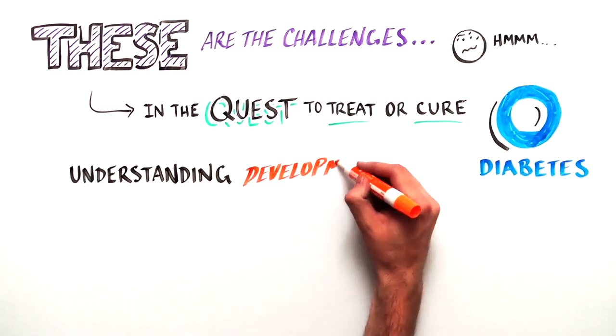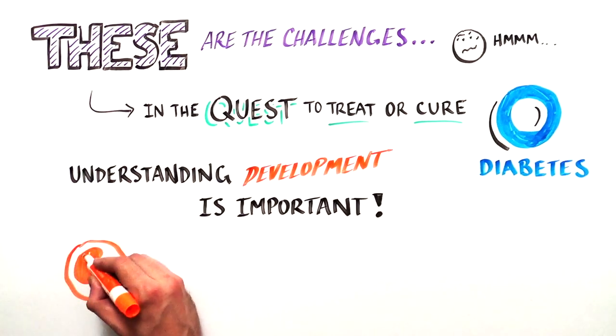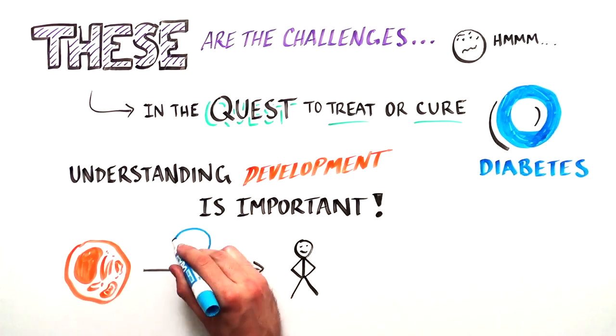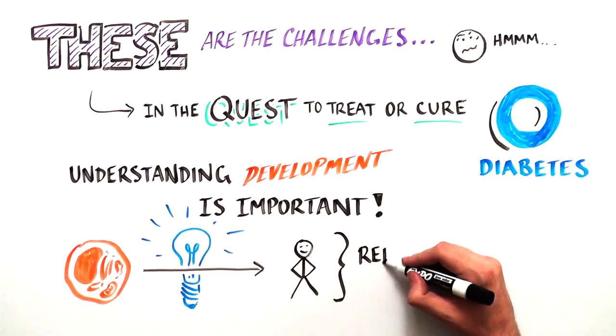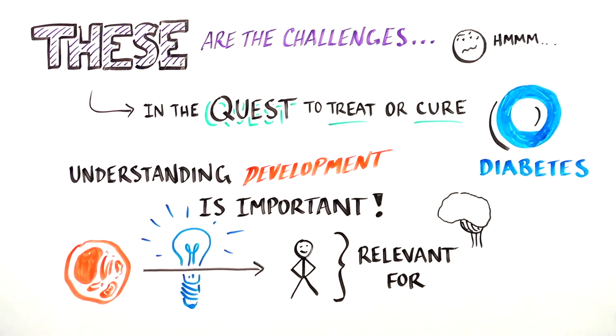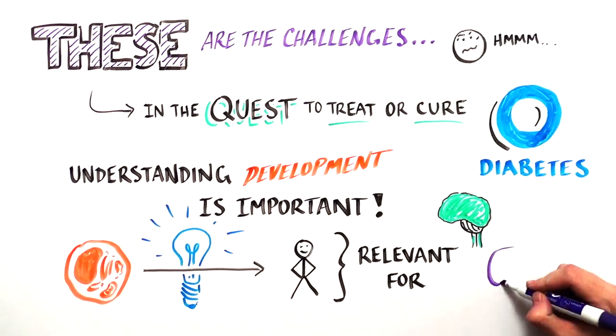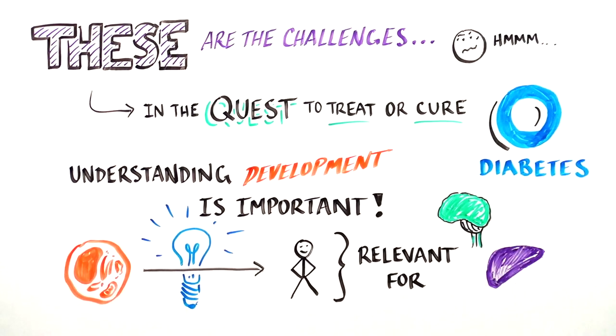But we wouldn't be here without the deep knowledge of how that one single cell produces 35 trillion other ones that make up a living human being. Observing how normal development happens helps scientists produce not only beta cells but many other cell types relevant for all kinds of diseases by creating brain cells, liver cells, or lung cells.